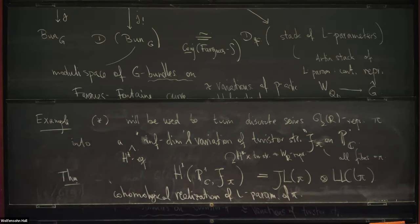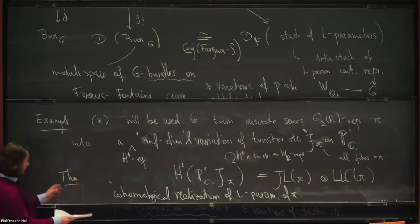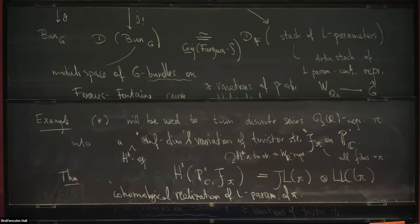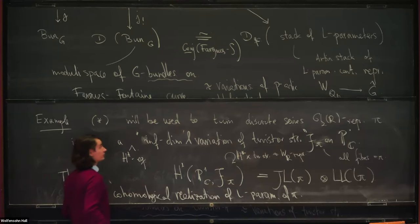This is extremely similar to results one finds for p-adic groups. Perhaps the first theorem of this sort was proved by Dillane for GL2(Q_p), and then there was a conjecture of Caraiani generalizing to GLn, which was proved by Harris-Taylor and later in a slightly different formulation.